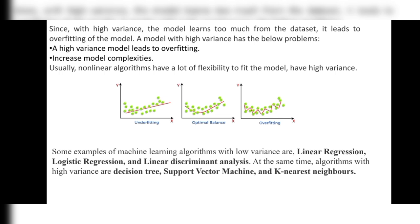Usually, nonlinear algorithms have a lot of flexibility to fit the model and have high variance. As shown in the diagram, the first case is underfitting without using high variance; next is the optimal balance, where you find the difference between the training and test data set using variance; and with high variance, we get overfitting, meaning we cannot find the correct solution. Examples of machine learning algorithms with low variance include linear regression, logistic regression, and linear discriminant analysis.